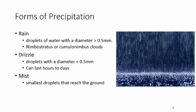Drizzle. A lot of people like to say 'oh, it's drizzling out' when they just mean it's kind of spitting — sporadically raining. Drizzle actually has a definition: it is water droplets with a diameter of less than 0.5 millimeters across. So 0.5 millimeters is the dividing line between drizzle and rain. Drizzle can last for hours or days. It's miserable.